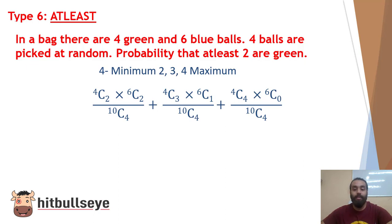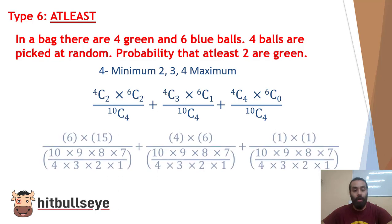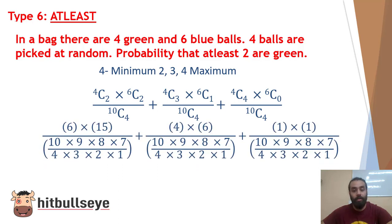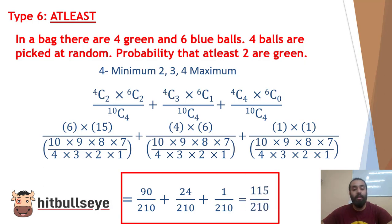Similarly, in the last part, 4C4 and 6C0 will be there. Now in the denominator, I have 10C4 to each. You can take one denominator, but some of the problems may be confused. So I have put it in each part. Solving this, you will easily get to the answer as 115 upon 210.